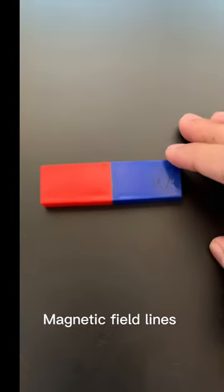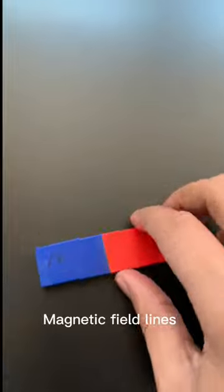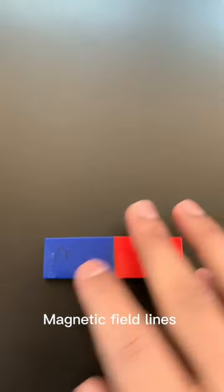Here we have a bar magnet. Typically speaking, a bar magnet is a dipole material, meaning that it has a south pole. Now here we have what we call some iron filings.